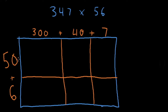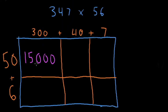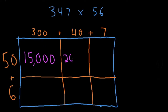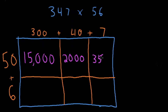Same touch strategy — touch the numbers on the side. 50 times 300: I don't have my 300 times tables memorized, but 5 times 3 equals 15, with three zeros to attach, giving 15,000. Next: 50 times 40 — shortcut is 5 times 4, which is 20, attach two zeros, giving 2,000. Lastly on the top row: 50 times 7 — 5 times 7 is 35, attach one zero, giving 350.